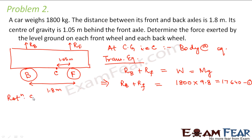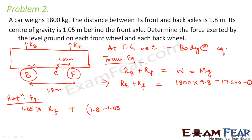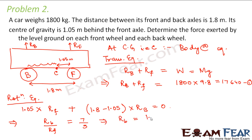For rotational equilibrium at point C, the net torque should be zero. The torque from the front wheel is 1.05 × Rf, and the torque from the back wheel is (1.8 − 1.05) × Rb = 0.75 × Rb. Setting them equal gives Rb/Rf = 1.05/0.75 = 7/5, so Rb = 1.4 × Rf.